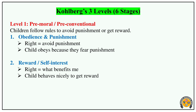The first level is Pre-conventional. Children follow rules to avoid punishment and gain rewards. In this stage, we avoid punishments and seek rewards. The two stages are: Obedience and Punishment orientation, and Reward and Self-Interest orientation.